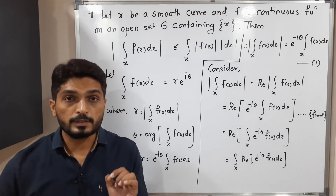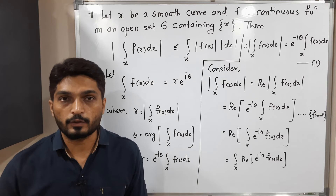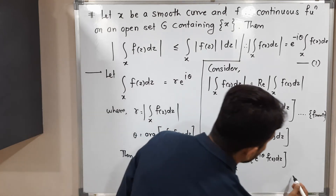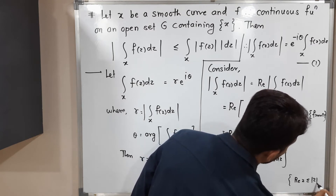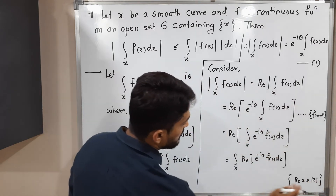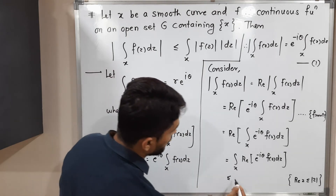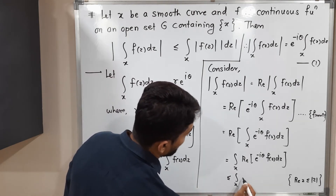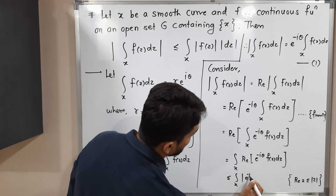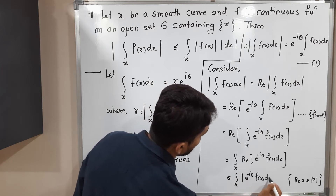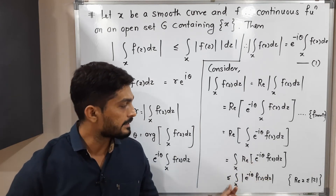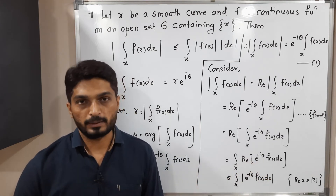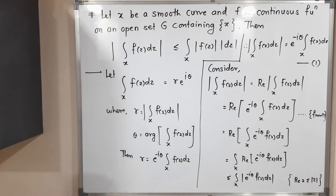We know that the real part of any complex number z is always less than or equal to the modulus of z. Using this result, we get that this is less than or equal to ∫_x |e^(-iθ) f(z)| dz, since the real part of any complex number is always less than or equal to its modulus.